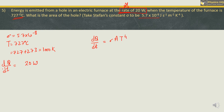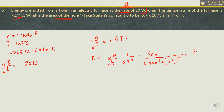Calculating area: A = 20 / (5.7 × 10⁻⁸ × (10³)⁴) = 20 / (5.7 × 10⁻⁸ × 10¹²) = 20 / (5.7 × 10⁴). Taking 10⁴ to the numerator as 10⁻⁴, we get A = 3.509 × 10⁻⁴ m².